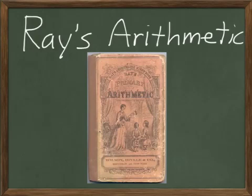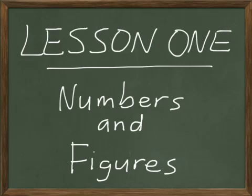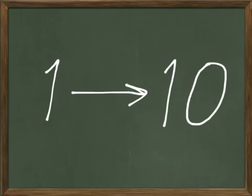All right, today we're going to begin Ray's Arithmetic. Ray's Primary Arithmetic is the book we're going to work out of. Today we're going to do lesson one, which is numbers and figures. Just for today we're going to count from one through ten, because the next lessons are going to start taking us up all the way to a hundred. For today we're just going to do numbers one through ten.